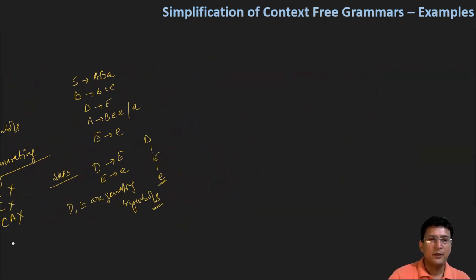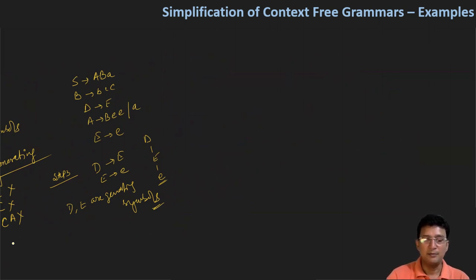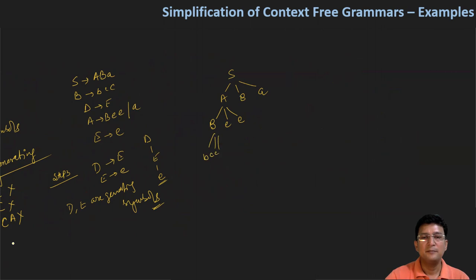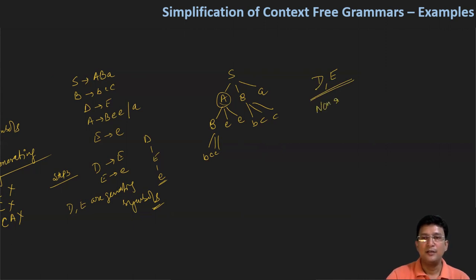Abhi hamne jitne bhi symbols hamare paas the, un sabhi ke baare mein dekh liya ki generating symbols kaun se hain aur non-generating kaun se hain. Yahaan pe sirf ek non-generating symbol mila aur woh hai C. Ab iske baad hum dekhte hain ki derivation ke dauran kaun se aisa symbol se jimpe hum kabhi nahi pahunch paayenge — unko hum kahenge non-reachable. So S se derivation start karte hain: S se milta hai A, B, A. A se do production milte hain: ya to B, e, e, ya terminal symbol a. B se ek hi type expansion possible hai: B produces b, c, c. Iska matlab yeh hai ki jo symbols D aur E hain, jo non-terminals D aur E hain, inpe aap kabhi pahunch nahi paayenge. To inko aap kahenge ki these are non-reachable symbols.